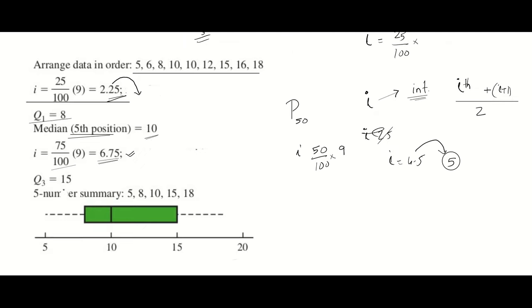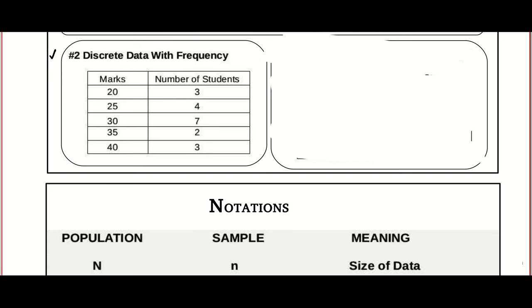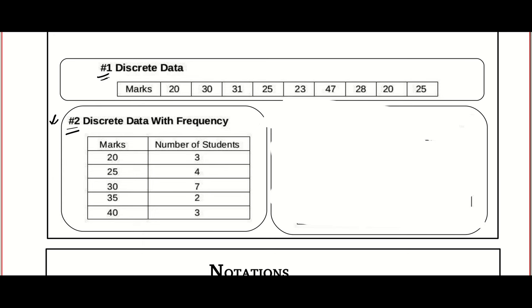For the third quartile, we go for the seventh position. You can then draw a box plot. Now let me teach you how to calculate quartiles and percentiles for Type 2. In Type 1, the data is raw individual series. In Type 2, it's the same data but classified — they don't repeat the data; they simply say 20 repeats three times, 25 repeats four times, etc.